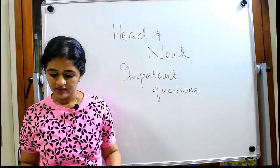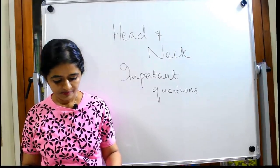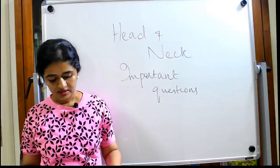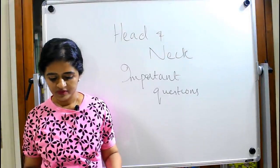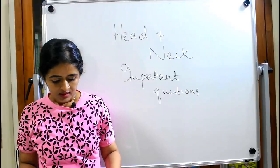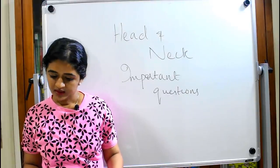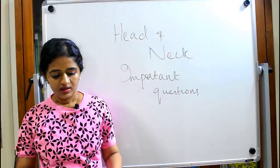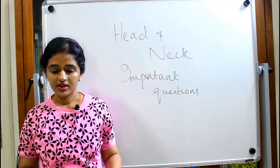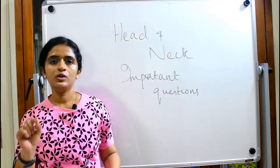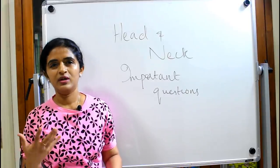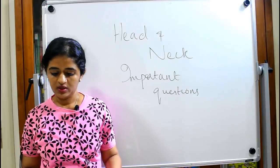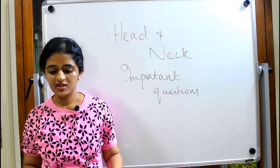The otic ganglion can be asked as a short note — if you remember the diagram it is easy to understand its innervation. The muscles of mastication are also a very favorite question. Regarding the pterygopalatine fossa — it's not as favored as the other topics, but study the pterygopalatine ganglion in detail; you need not mug up the entire fossa.